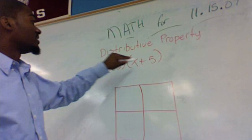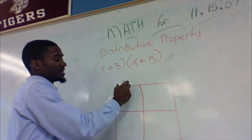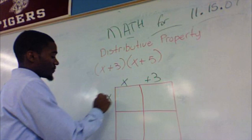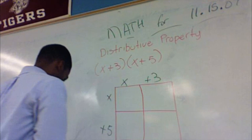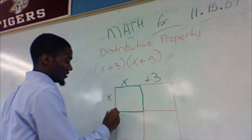We'll write what the first one is, which is x plus 3, and then we have x plus 5. So the first step is find the area of each of these squares. This first square here, the length is x and the width is x, so the area is x squared.